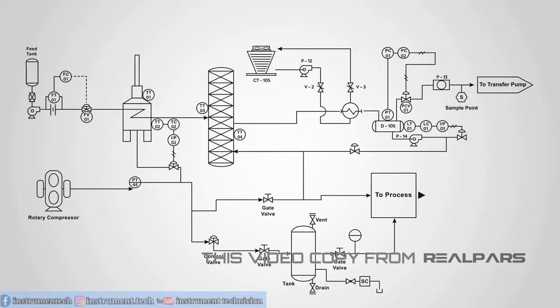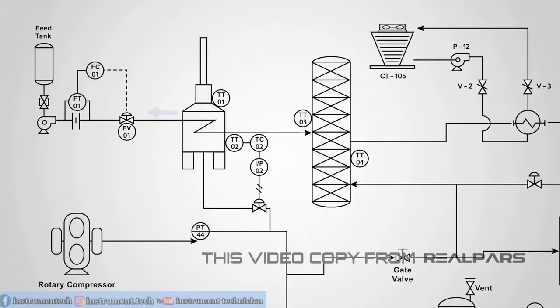The symbols contained in PNIDs represent the equipment in the process such as actuators, sensors, and controllers. Process equipment such as valves, instruments, and pipelines are identified by codes and symbols.